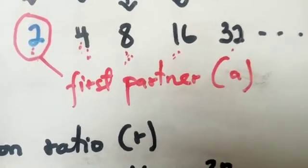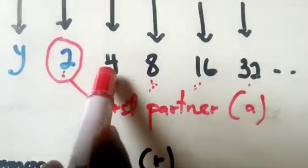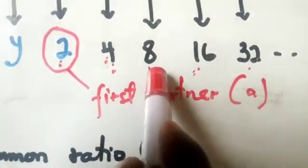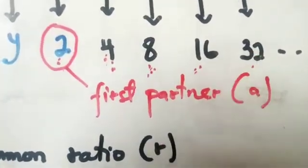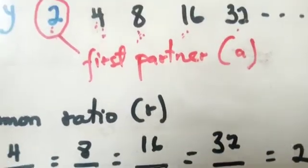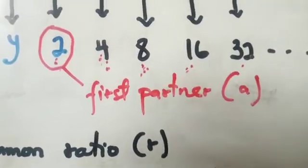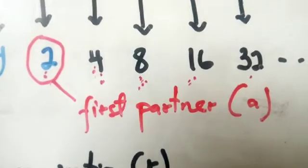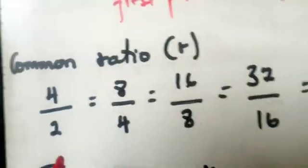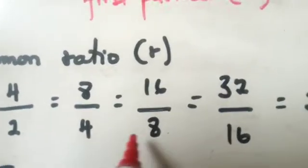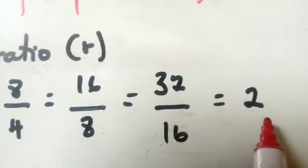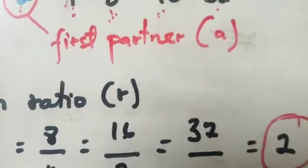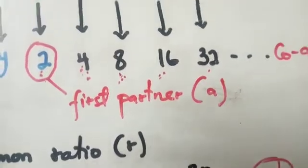In our example, dividing each partner by the previous one gives 2 every time. So the common ratio is 2, and all answers are equal. This confirms that the mapping is an exponential mapping. That is the first key characteristic for identifying an exponential mapping.